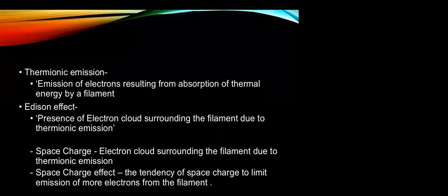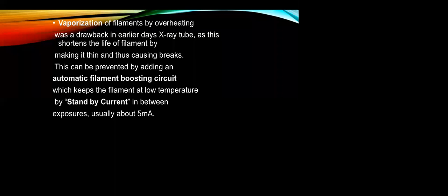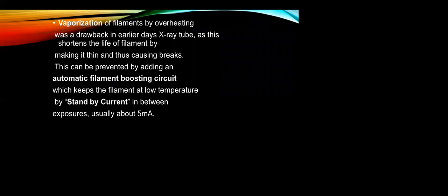An important consideration is vaporization of the filament. Because the filament is repeatedly heated, it may lead to overheating, which was a drawback in earlier X-ray tube decades — it shortened the life of the filament by making it thin and causing it to break. This can now be prevented by adding an automatic filament boosting circuit, which keeps the filament at low temperature using a standby current of about 5 mAs between exposures, so that in between exposures the filament does not get overheated.